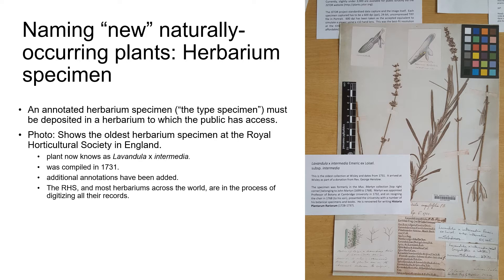The photo on the right shows an annotated herbarium specimen at the Royal Horticultural Society in England of a lavender that was collected in 1731. This photo was taken just four years ago when I was last visiting the RHS garden in England. Most herbariums these days are working on digitizing their herbarium collections in order to preserve them in a different format and so that greater access can be given to them.